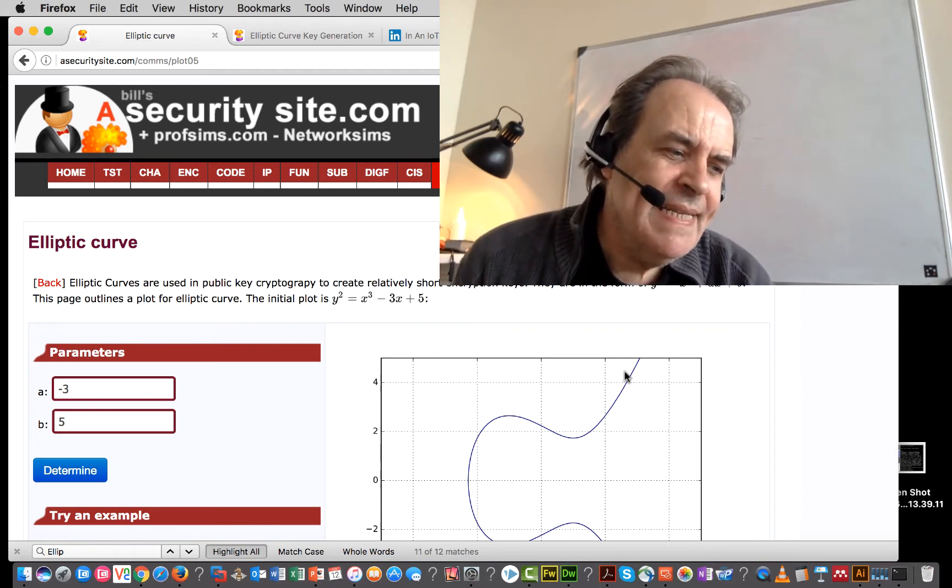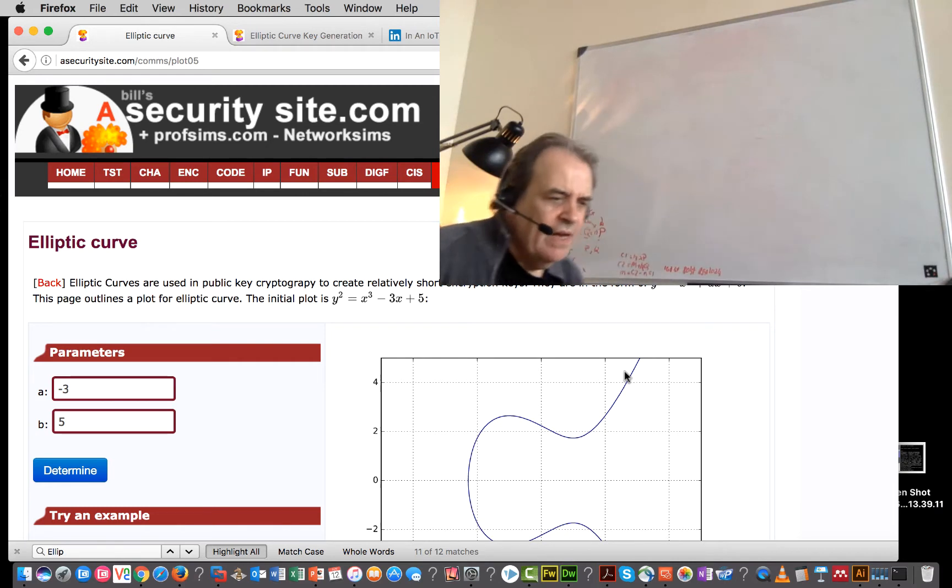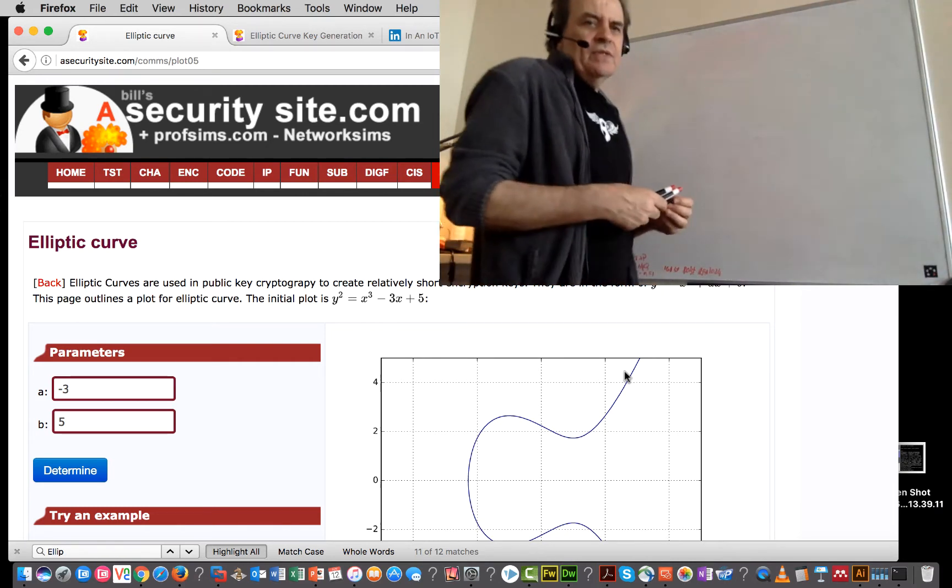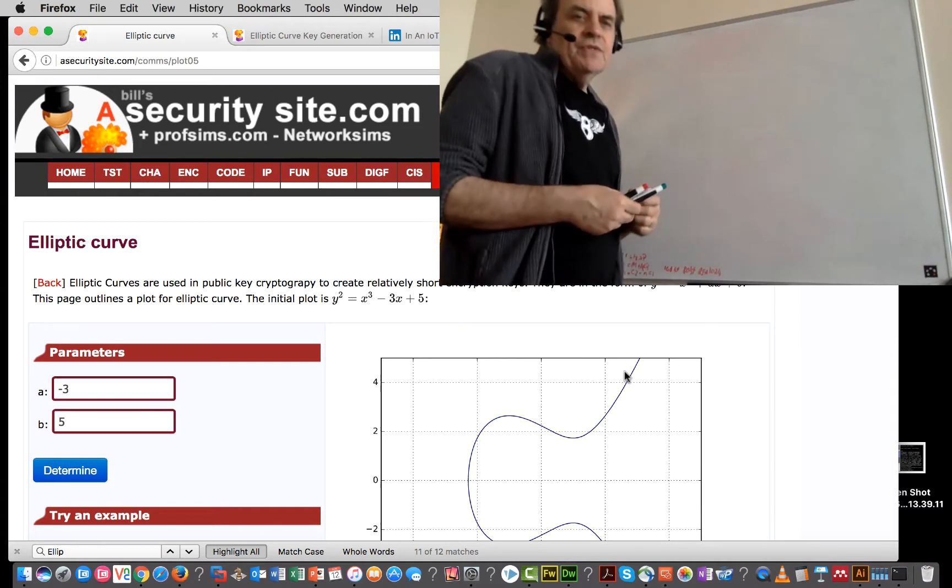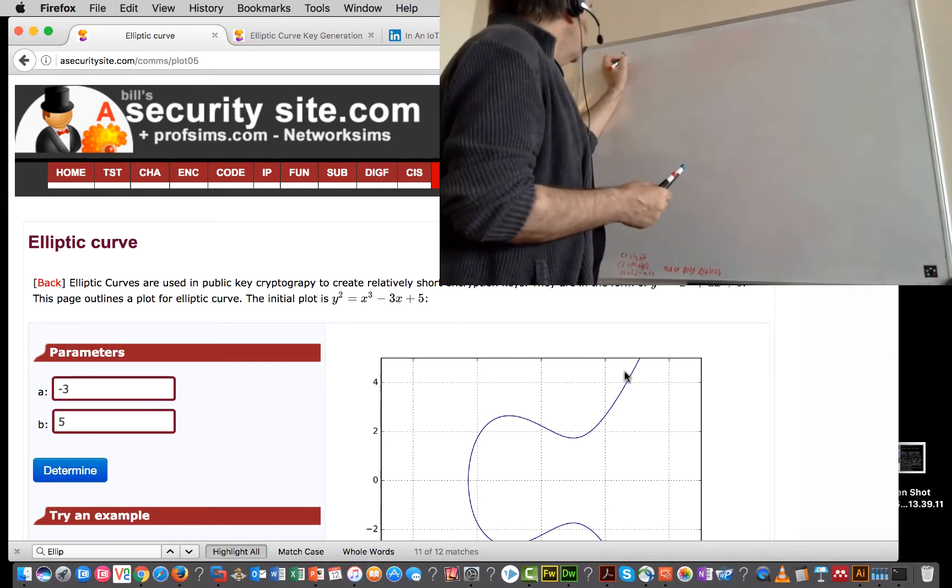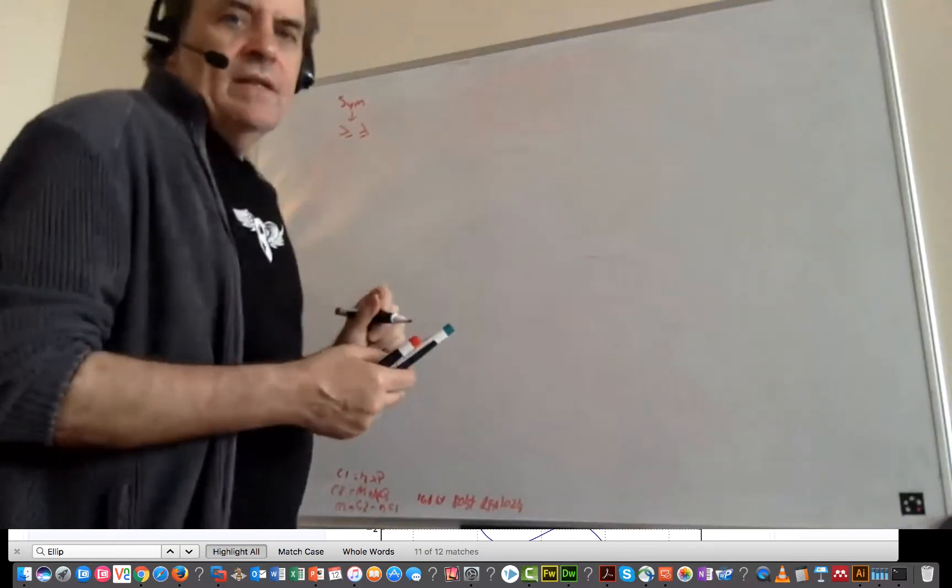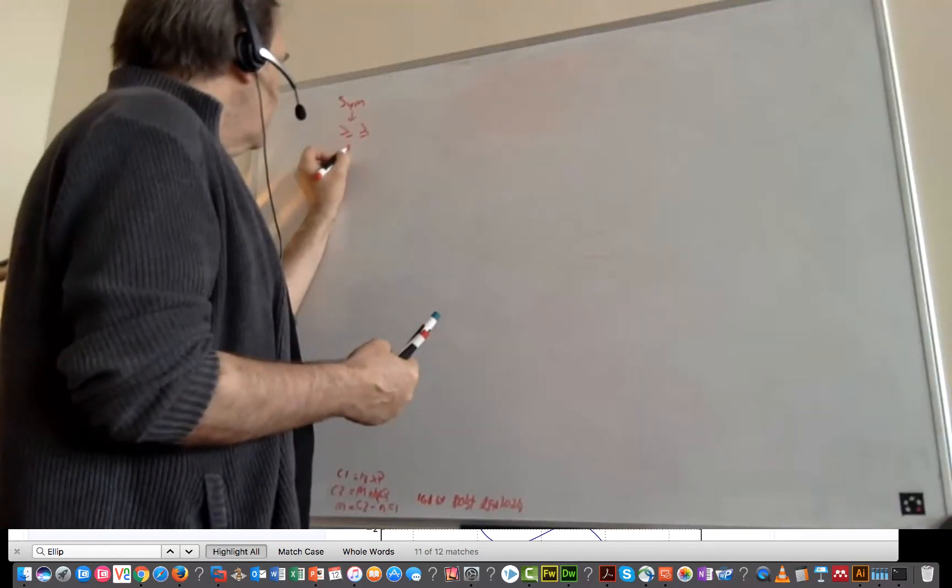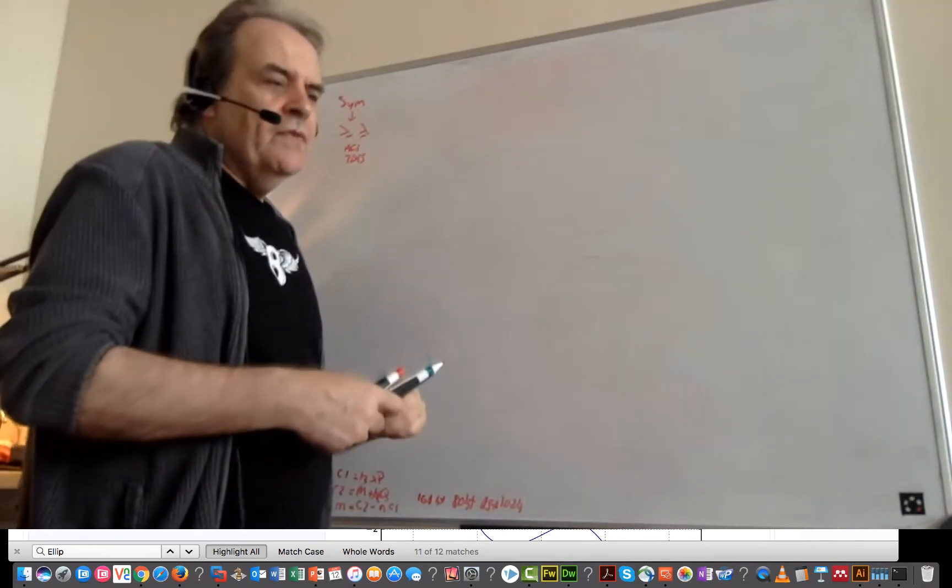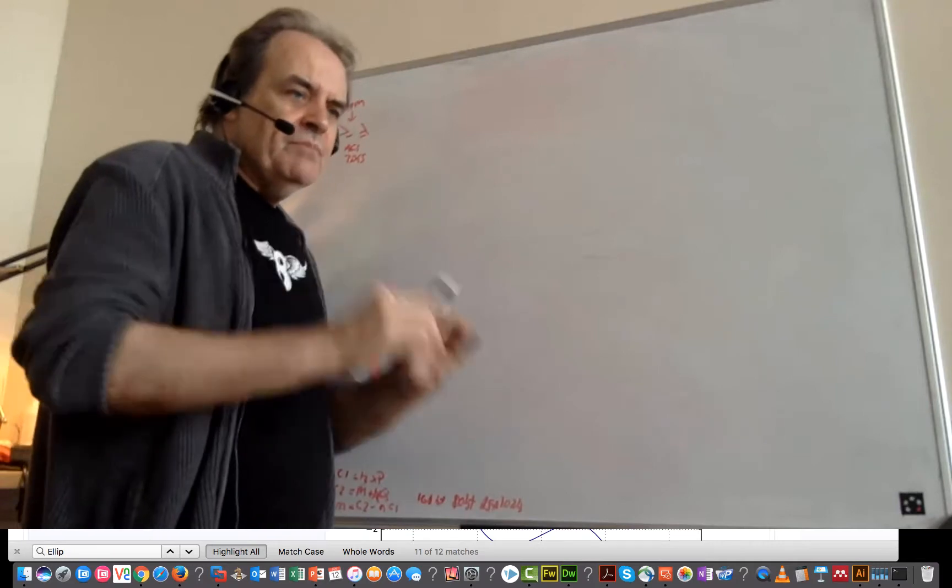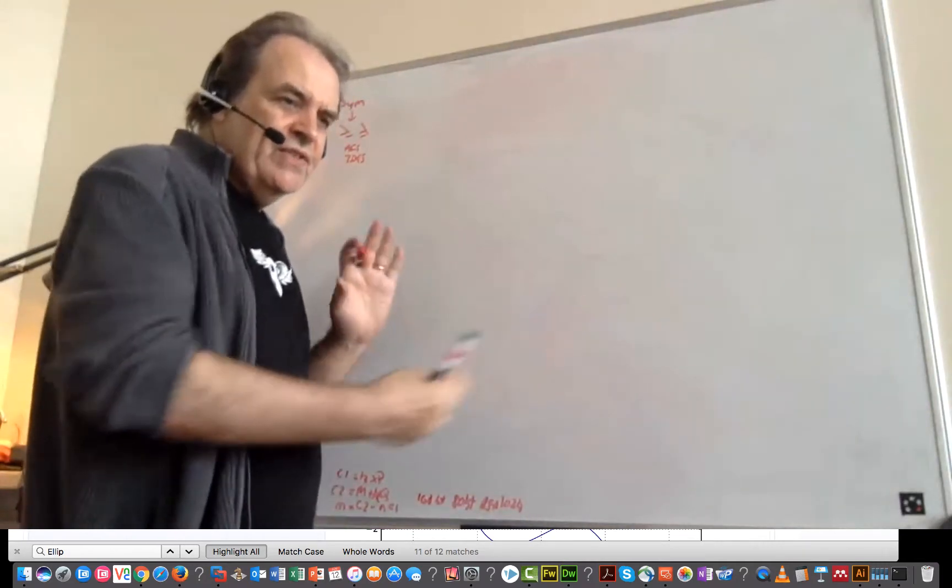All right, so I'm going to try and explain elliptic curve encryption and the methods that we use. In encryption, we have two main methods, which is symmetric key encryption. Symmetric key encryption, we have the same key to encrypt, then we have to decrypt, and we have AES, 3DES, and so on. This is good for keeping our messages private, and then we'll have some way that we can actually exchange the keys.